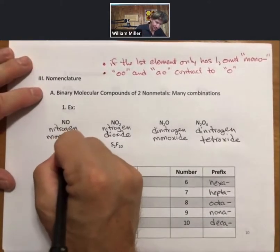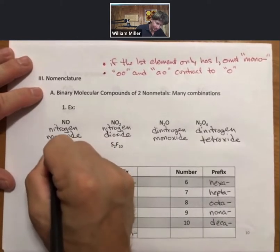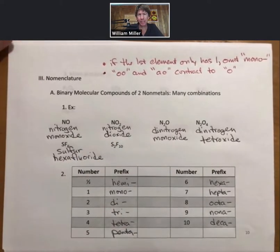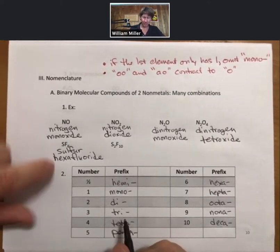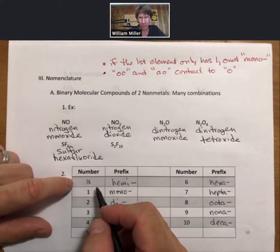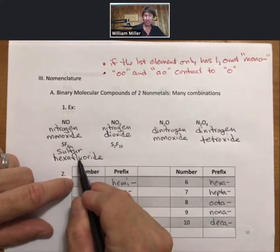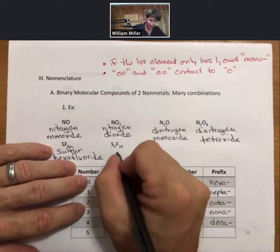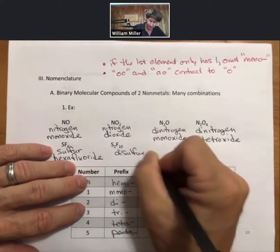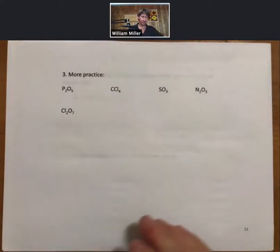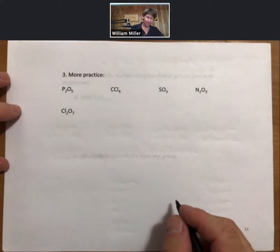Sulfur hexafluoride. One thing to be aware of, spelling does count when we do nomenclature on quizzes and exams and homework, so please be careful. Fluoride as U-O. It is not flouride. Flour is what we use to bake bread, fluoride is what we use to do chemistry. Disulfur decafluoride, like so. More practice, we'll leave these for companion problems.